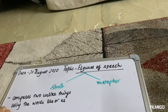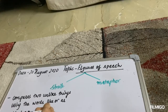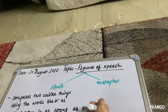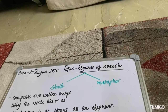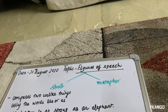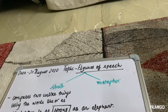For example, if I say 'my brother is as strong as an elephant' — what am I doing here? I am comparing my brother's strength with an elephant's. So you can see there are two unlike things: my brother and an elephant. The common thing between them is that they are both strong, and I have made use of the word 'as', so it is a simile.